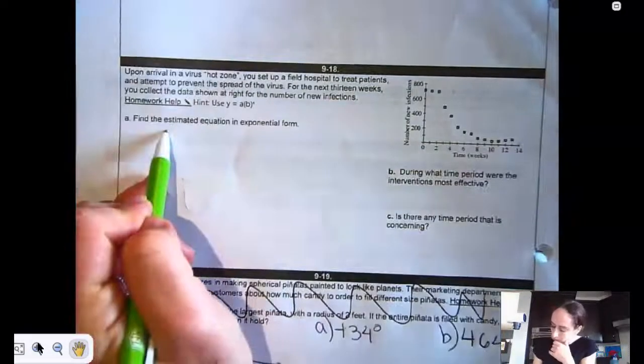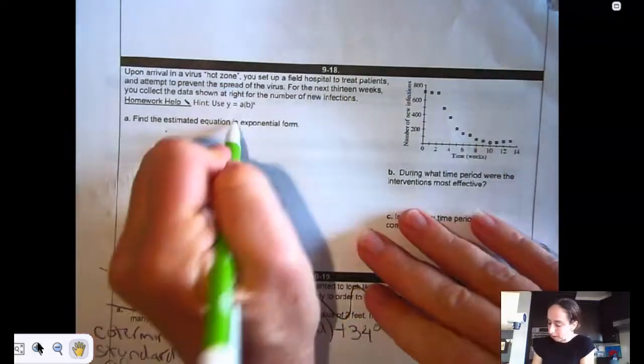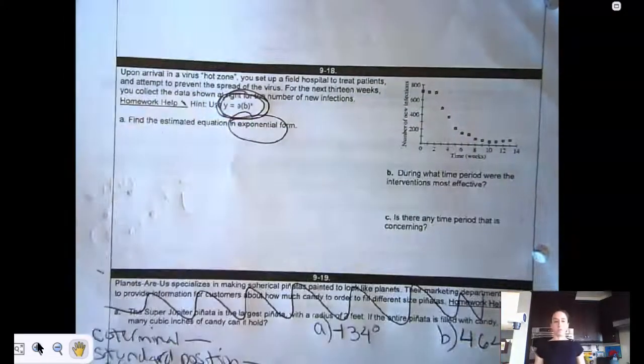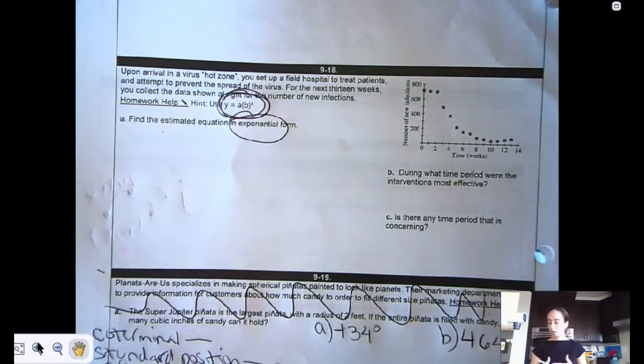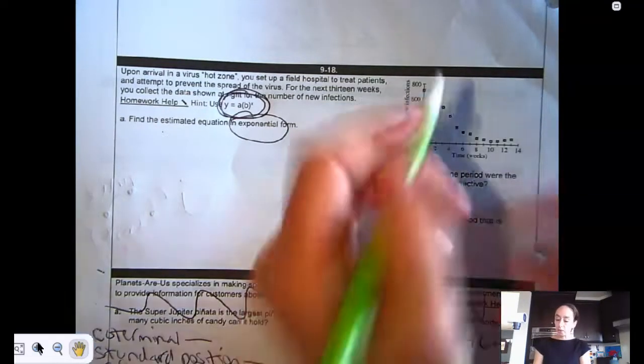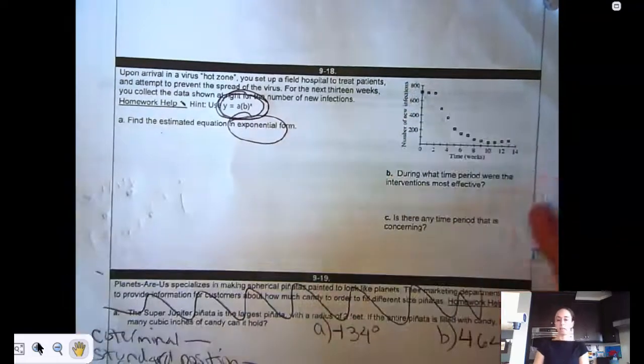When you're doing this, they want you to find the equation of the exponential. So if you look here, that's the equation for an exponential. We're all not going to have the exact same thing, but it's kind of an estimate based on what looks like the exponential.